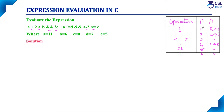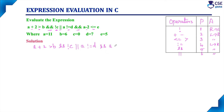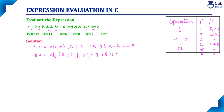We need to evaluate this expression according to priority and associativity. The given expression is A plus 2 greater than B, AND NOT C, OR A not equal to D, AND A minus 2 less than or equal to D. Substituting values: A is 11, so 11 plus 2 greater than B, and NOT C where C is 0, OR A is 11 not equal to D is 7, AND A is 11 minus 2 less than or equal to E is 5.